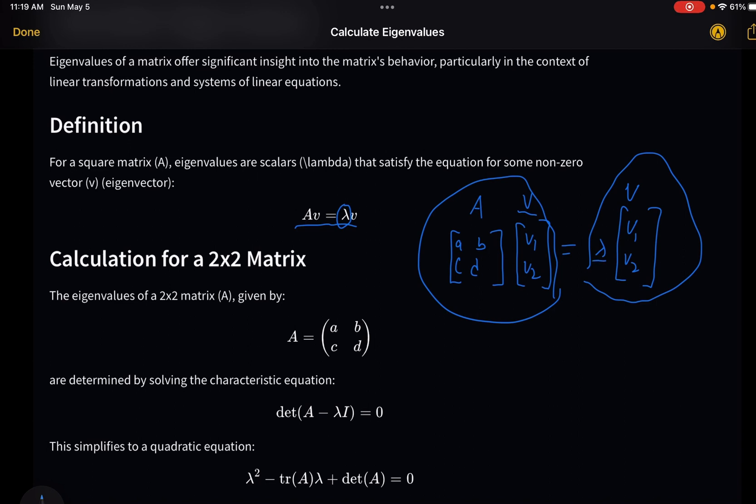So we're trying to compute this for a 2x2 matrix, not in the general case, just an easier version of this. To compute the eigenvalue, it could be computed using this formula right here. Basically you could simplify it down into this equation, and we're going to go through how you actually do that.